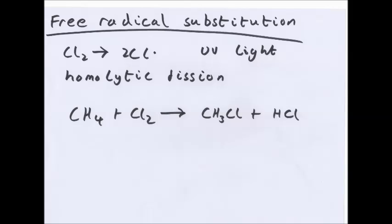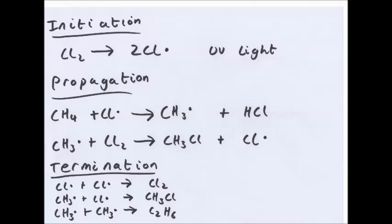Free radical substitution — this one I think is the hardest. This usually involves chlorine. When under UV light, Cl2 breaks by homolytic fission forming two chlorine radicals. Free radical substitution is when radicals come and substitute, usually hydrogen. So: methane plus chlorine becomes chloromethane plus hydrochloric acid. There are three stages. Initiation: Cl2 undergoes homolytic fission to give two Cl radicals. Propagation: methane plus one Cl radical gives CH3 radical plus HCl; then CH3 radical plus Cl2 gives CH3Cl plus a Cl radical. This repeats millions of times because the chlorine radicals are continuously reused.